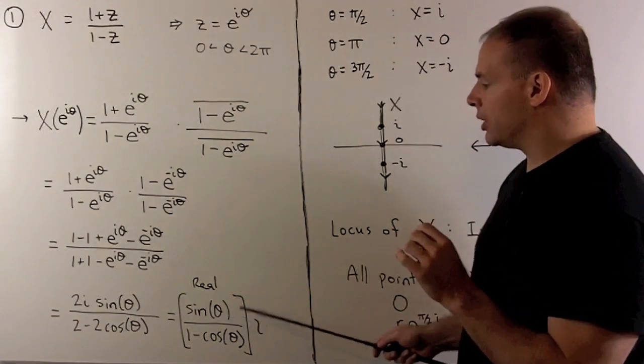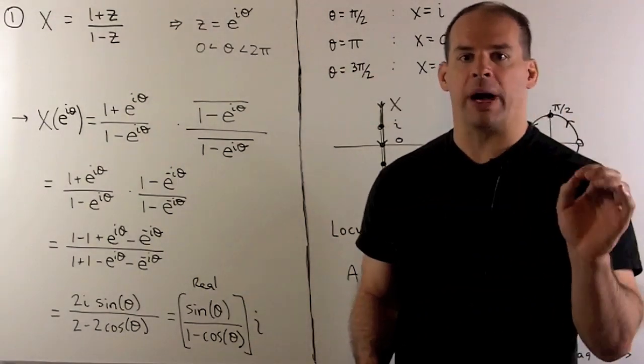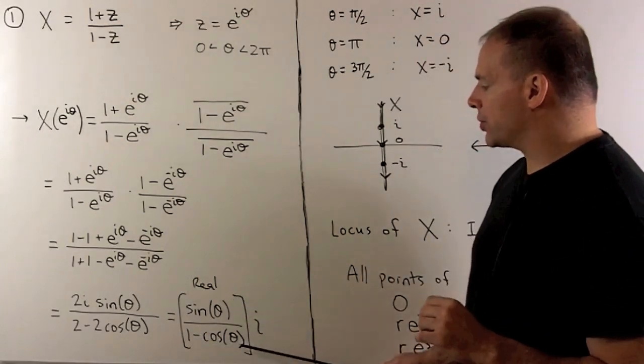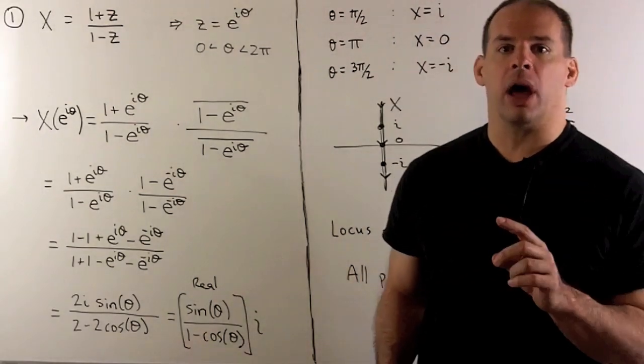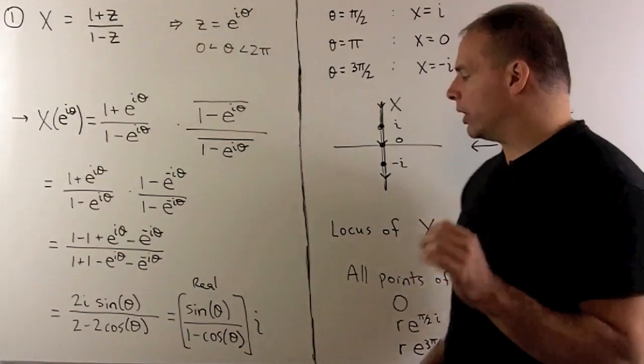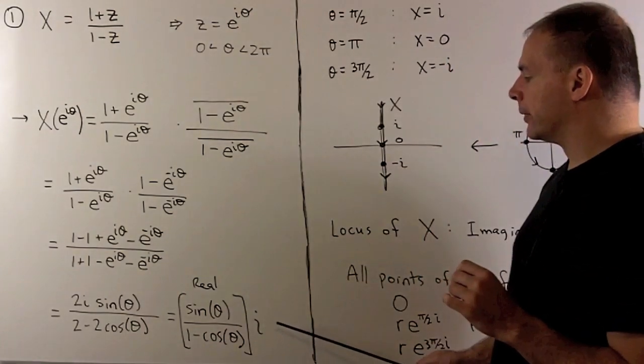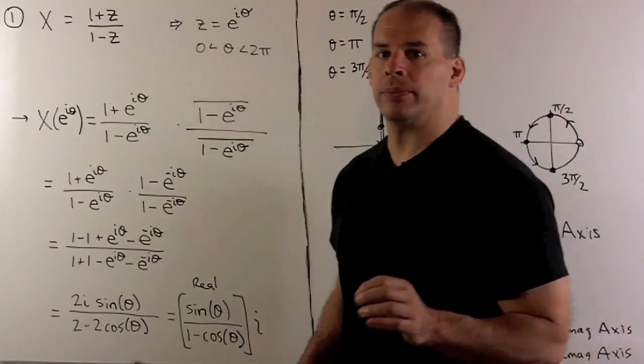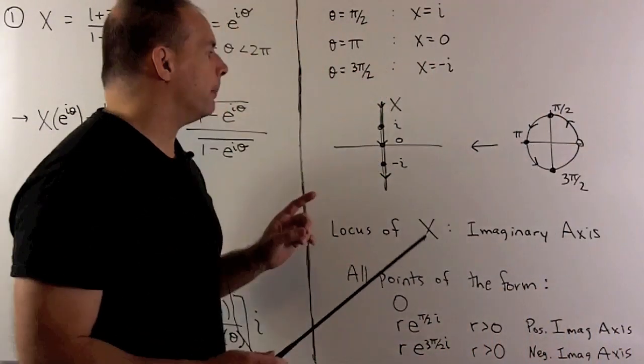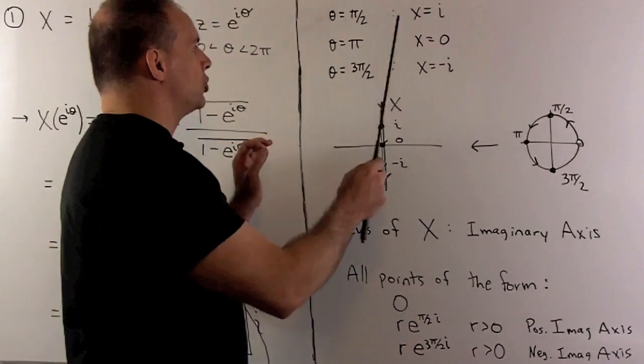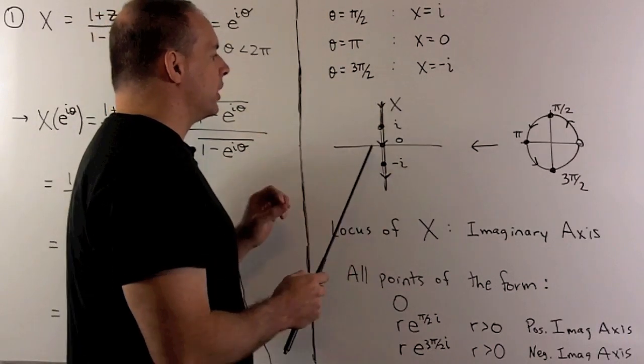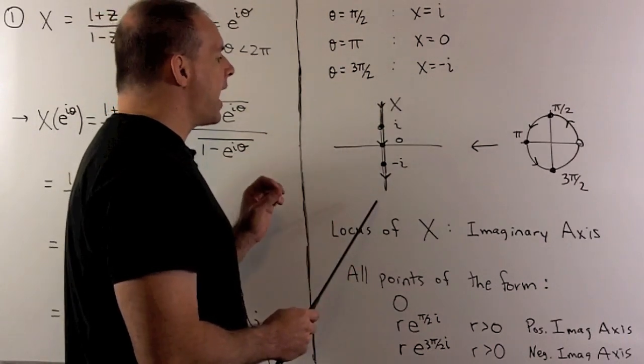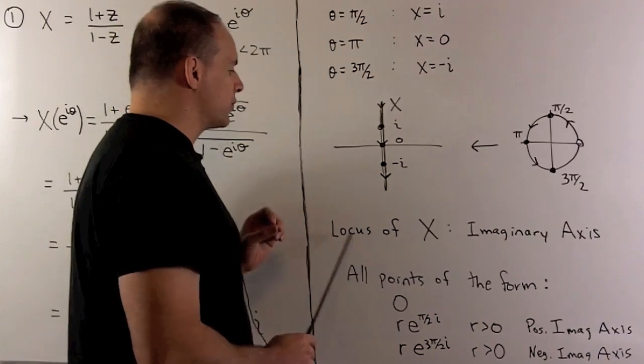Because our theta is real between 0 and 2 pi, sine theta over 1 minus cosine theta is always a real number. So I have a real number times i. All of these points live on the imaginary axis. If we check a few points, we'll see that we're going to get all points on the imaginary axis. So that's going to be our locus for x.